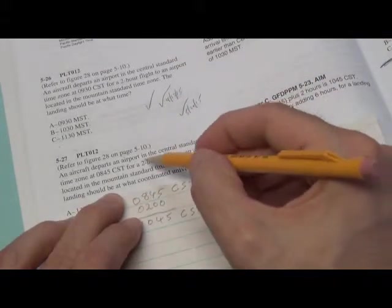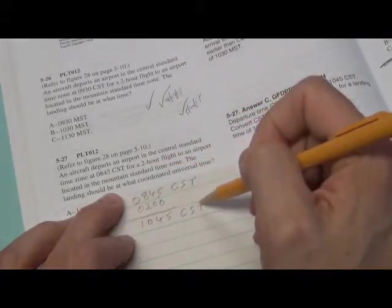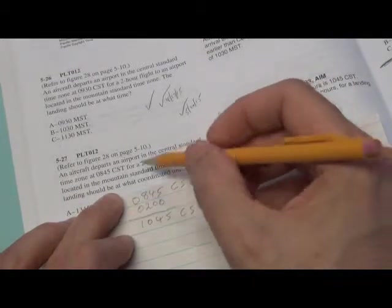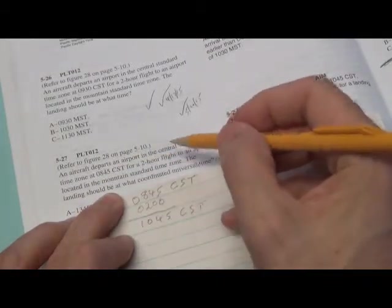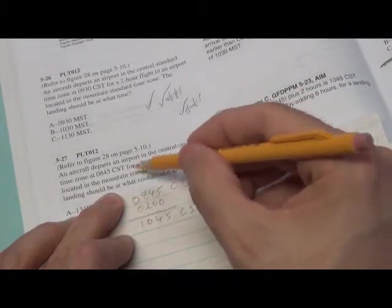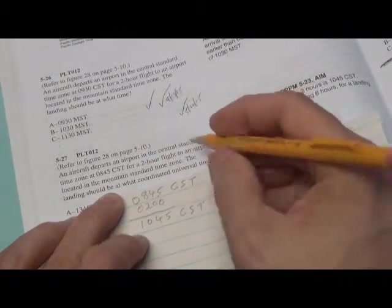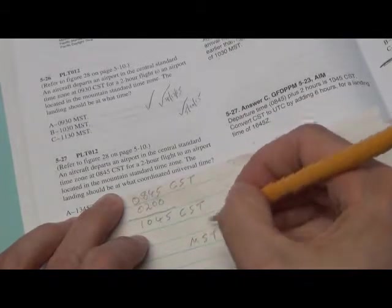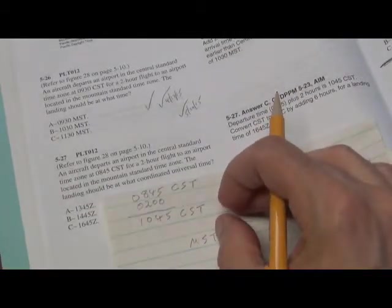So we know that in terms of Central Standard Time, he lands at 1045 Central Standard Time. But they say that he's landing at an airport located in Mountain Standard Time. So we know we have to convert to Mountain Standard Time. And how do we do that? Very simple.